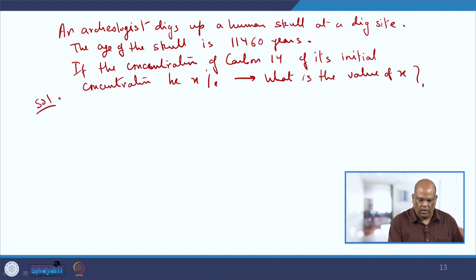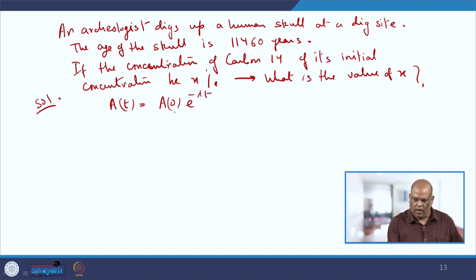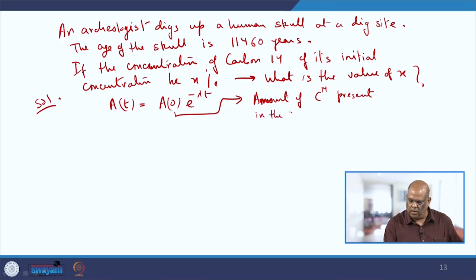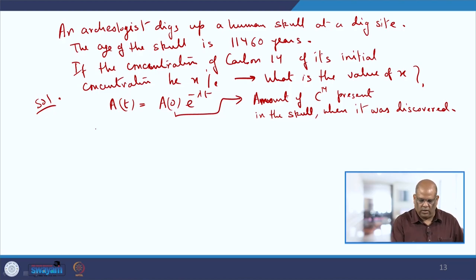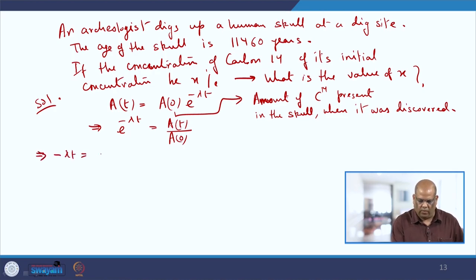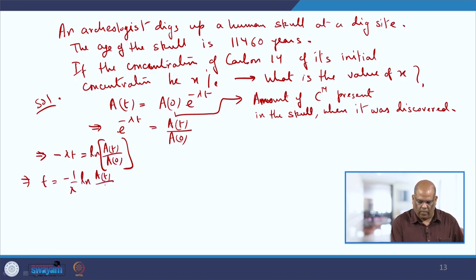Our governing equation is A(t) = A₀ e^(−λt), where A₀ is the amount of C-14 present in the skull when it was discovered. Taking the log of both sides gives e^(−λt) = A(t)/A₀, and this implies t = −(1/λ) ln(A(t)/A₀).